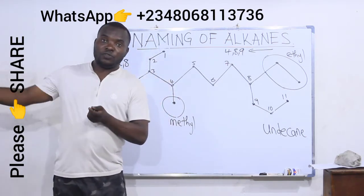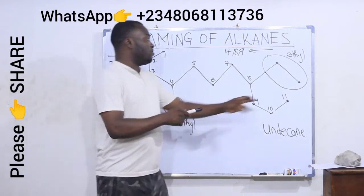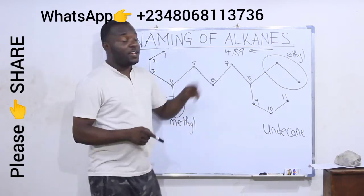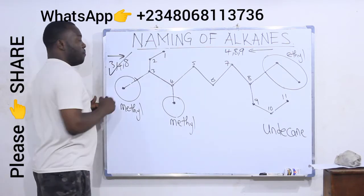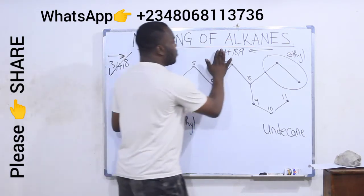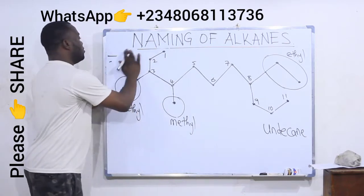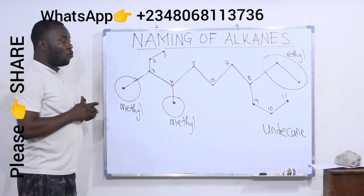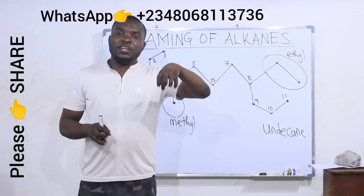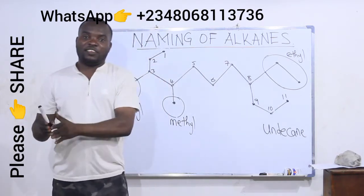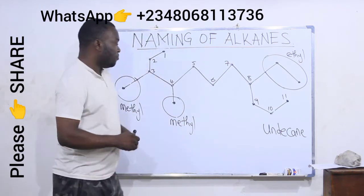The rule says number from the side that will give the attachments a lower number. If I number from one side it is 4, 8, 9. From the other side it is 3, 4, 8. So I follow the direction where they have a lower number. Now the next rule is rule number four, which says when writing the name of the compound, write the positions and names of attachments first, followed by the name of the longest chain.